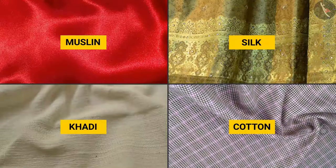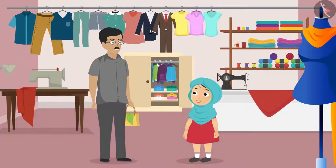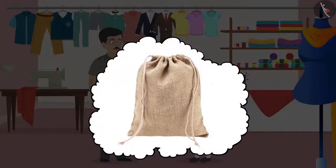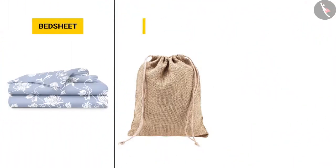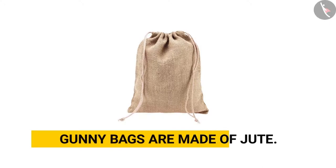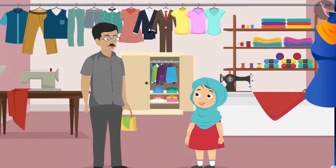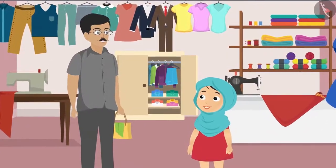If you observe a piece of cloth closely, you will notice horizontal and vertical thread work. These threads and strands are more visible in a coarse cloth. What do we mean by a coarse cloth? Like a gunny bag. Cloth is not just worn. It has many other uses — bed sheets, sacks, bags. All of these are made of cloth. Gunny bags are made of jute. If you notice, you can see each individual thread clearly. Which thread is used in weaving a cloth and how is a cloth woven? These factors determine how it will appear and feel.